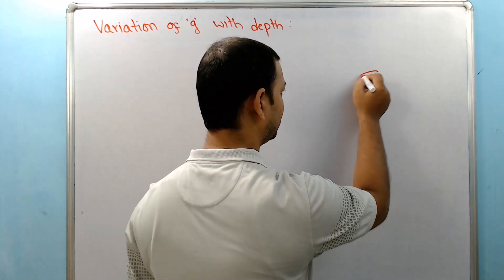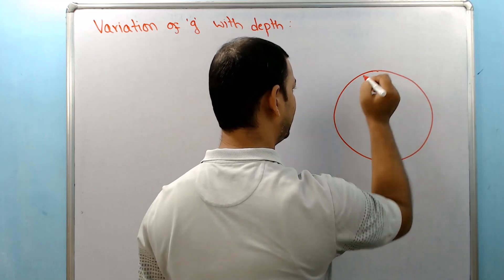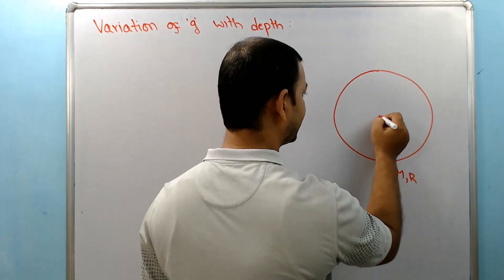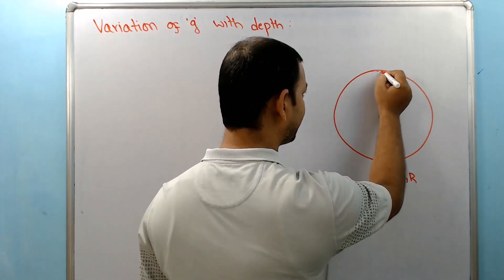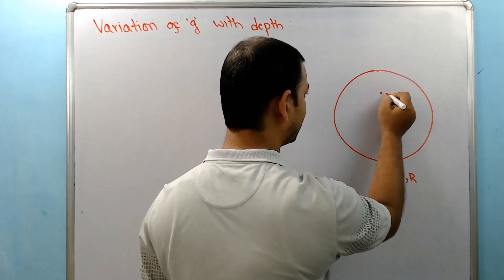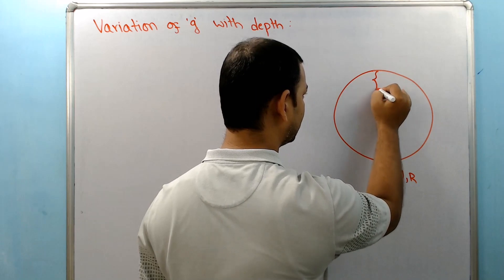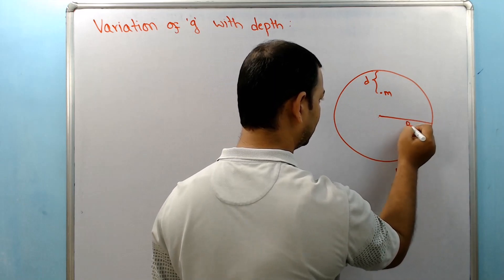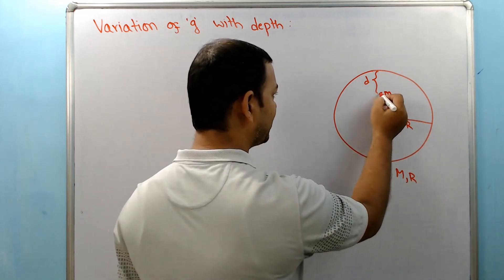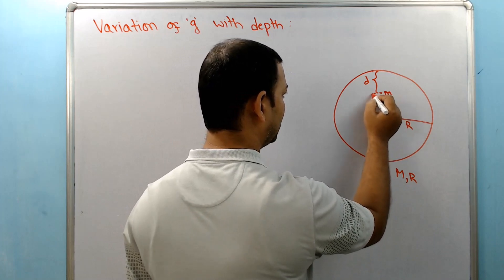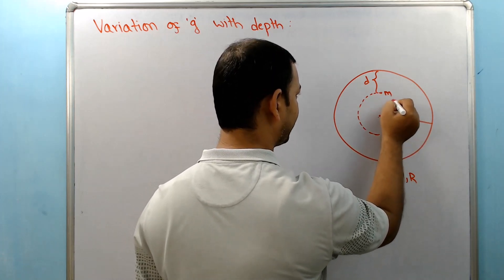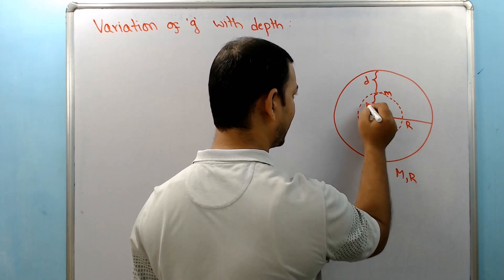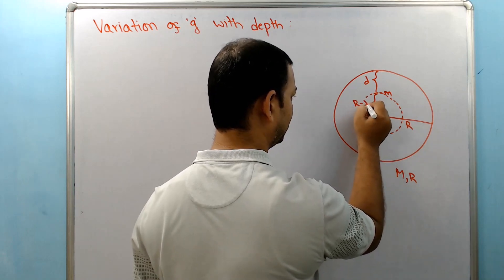This is Earth, with mass M and radius R. This is the center of the earth. Here we have a depth D. We have a particle with mass at depth D. The surface of the earth has radius R, so this distance from the center to the particle will be R minus D.